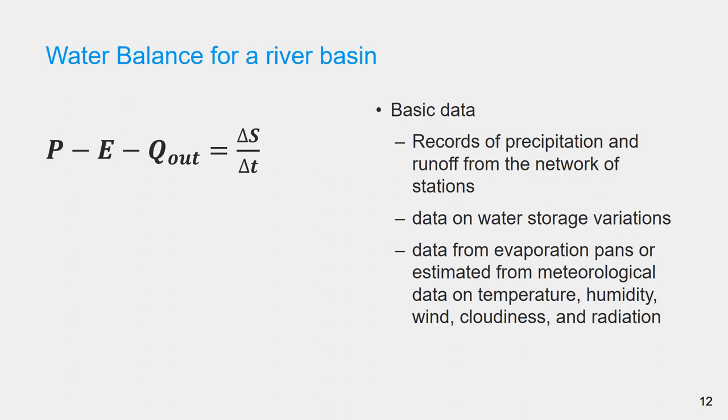These are obtained from snow surveys, observations of soil moisture, water level fluctuations in lakes, and groundwater fluctuations in wells. To compute evapotranspiration, it's desirable to have data from evaporation pans or tanks, and meteorological data on temperature, humidity, wind, cloudiness, and radiation, which are used to compute evapotranspiration.